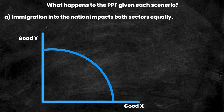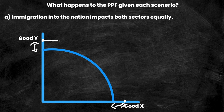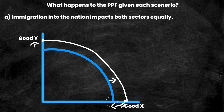Our first scenario is scenario A: immigration into the nation impacts both sectors equally. The first thing we need to determine is whether this is a positive or negative economic shock — and obviously immigration into the nation is a positive shock. That means we're going to be more productive in producing both good Y and good X, and since it impacts both sectors equally, we'll see the PPF curve shift perfectly outward by the same amount for both goods. This is a rightward shift where the production of both good Y and good X is strictly greater than before.